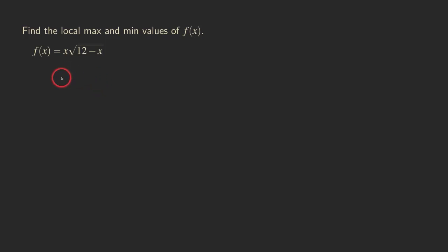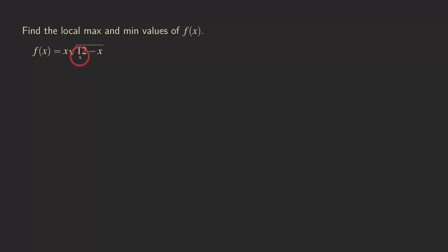Hello everyone, it's Wilson here. Today I want to continue to talk about how to find local max and local min functions. This time we have a function that's x times the square root of 12 minus x. So how do we do this? Just like usual, we are going to use the first derivative test.